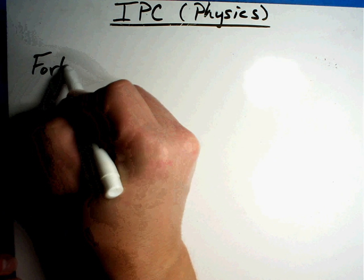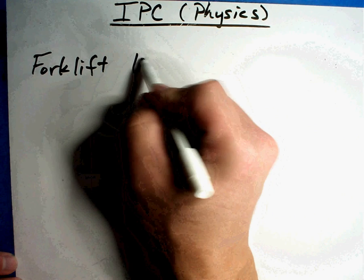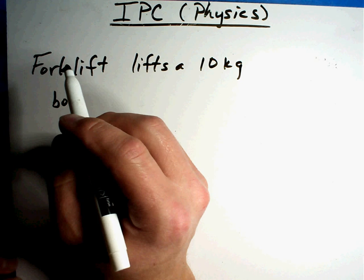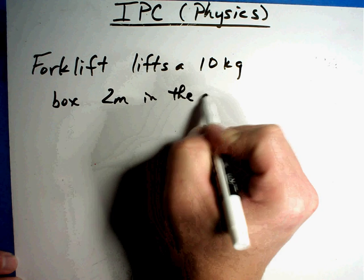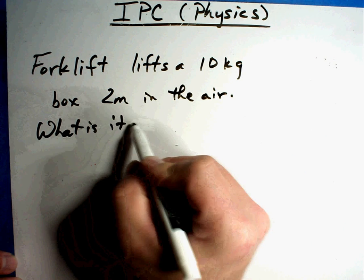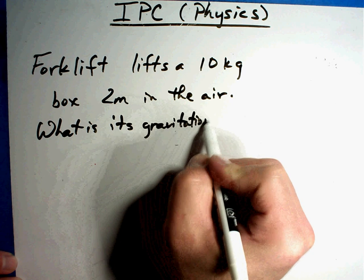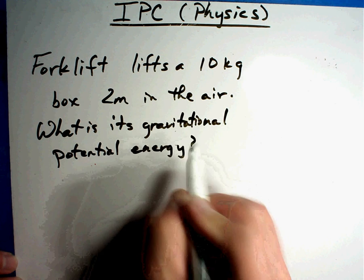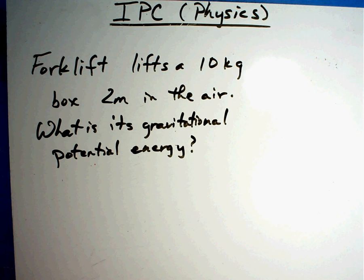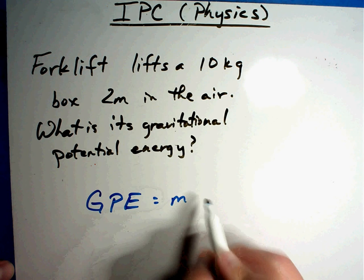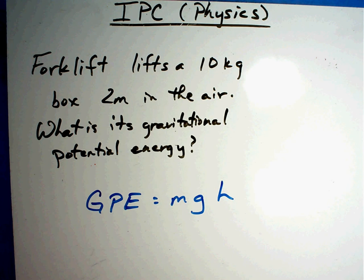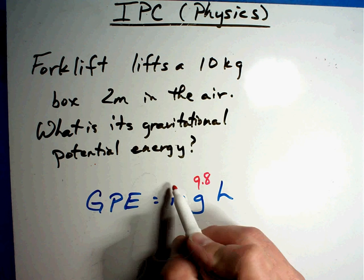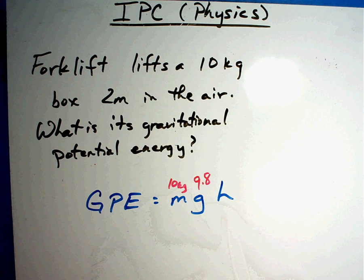We'll just use a forklift. A forklift lifts a 10 kilogram box 2 meters in the air. What is its gravitational potential energy? Gravitational potential energy. Well, when I look it up on the chart, it says gravitational potential energy equals mass times gravity times height. Now, I automatically know one of the numbers because they give it to me. Gravity is 9.8, so I know that. A forklift lifts a 10 kilogram, that's the mass, 10 kilogram box. Height, 2 meters.